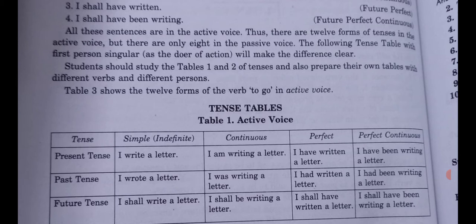For future continuous: will or shall plus be plus V1 plus -ing. For future perfect: will or shall plus have plus the third form of the verb. Example: I shall have written a letter. For future perfect continuous: will or shall plus have plus been plus V1 plus -ing. Example: I shall have been writing a letter.